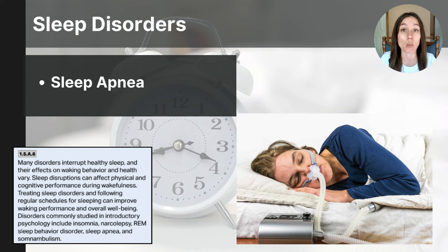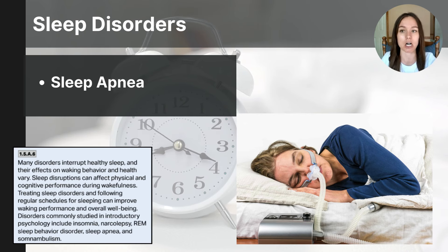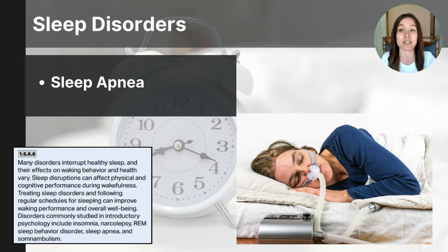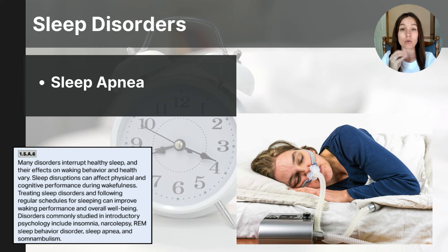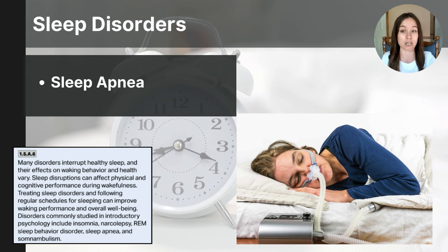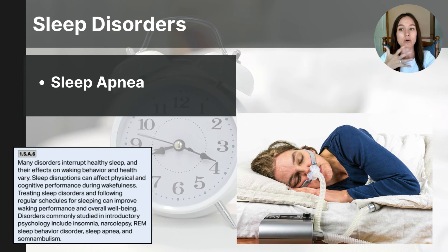Next is sleep apnea. Sleep apnea affects one in 20 adults and is characterized by repeated interruptions in breathing during sleep, often caused by a collapse of the upper airway or a failure of the brain to signal the body to breathe. These interruptions can last from a few seconds to minutes and may lead to fragmented sleep, excessive daytime sleepiness, and higher risk of cardiovascular problems. Symptoms include loud snoring, choking or gasping during sleep, and difficulty staying asleep. Treatment often involves lifestyle changes like weight loss, but the most effective treatment is CPAP — continuous positive airway pressure therapy — which uses a machine providing a steady stream of air through a mask to keep the airways open.